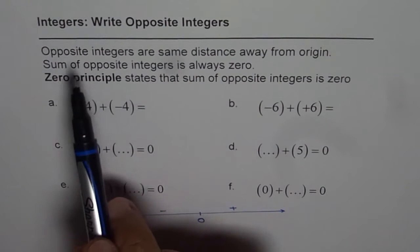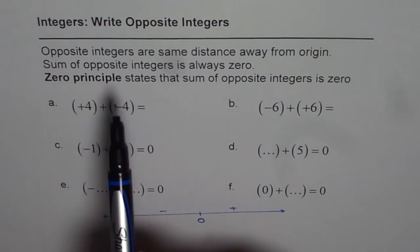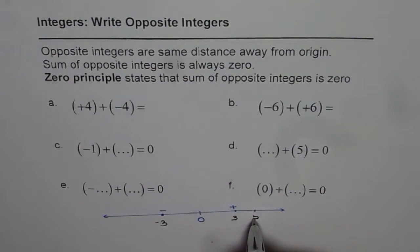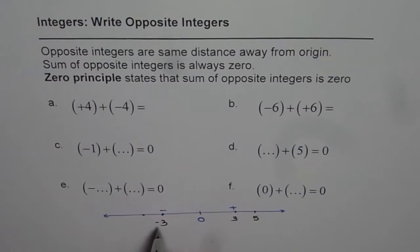When we say opposite integers, that means the two numbers are same distance away from 0. So if I write minus 3 here, then the opposite integer will be plus 3. For plus 5, the opposite integer will be minus 5. Same distance away from origin. That is the concept of opposite integer.